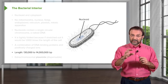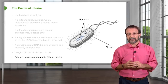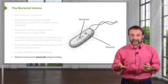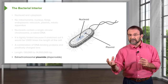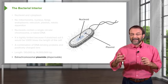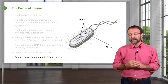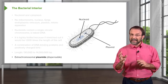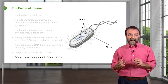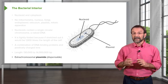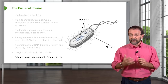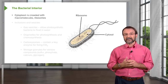In addition to the nucleoid with the chromosomal DNA, many bacteria have what we call plasmids. These are separate pieces of DNA — typically circular — and they're not necessary for the bacteria to grow. But these plasmids move easily from bacteria to bacteria, and they can carry things like antibiotic resistance genes, so they're very important for bacterial diseases.